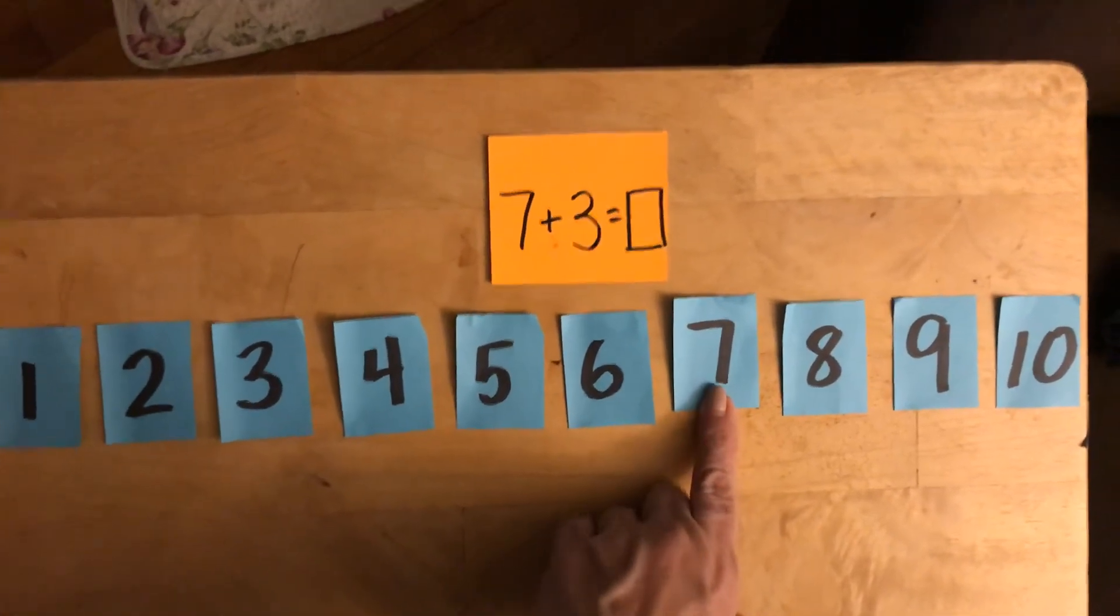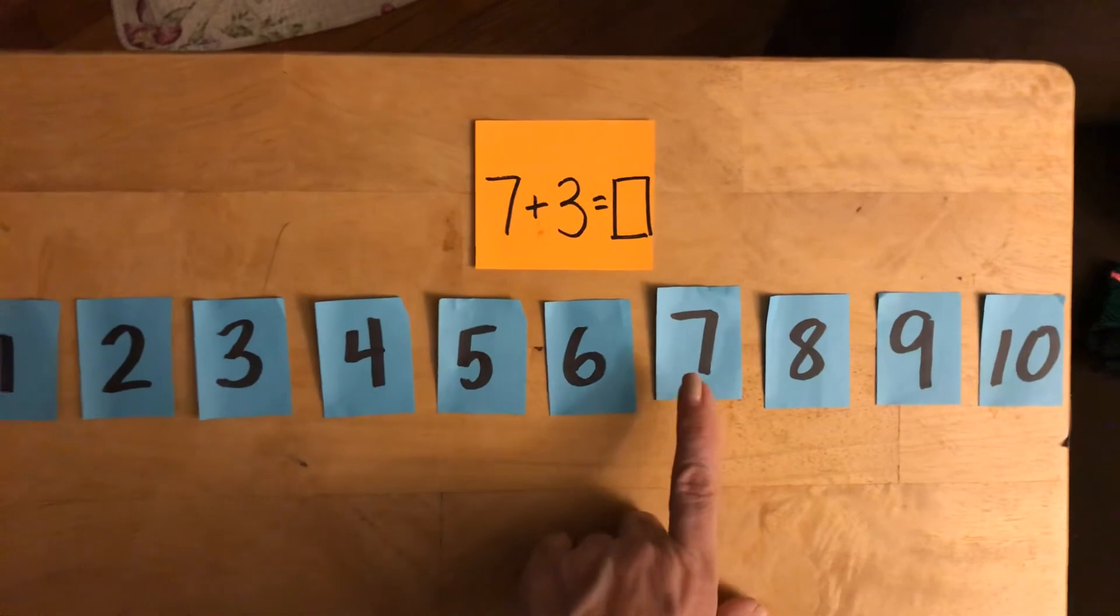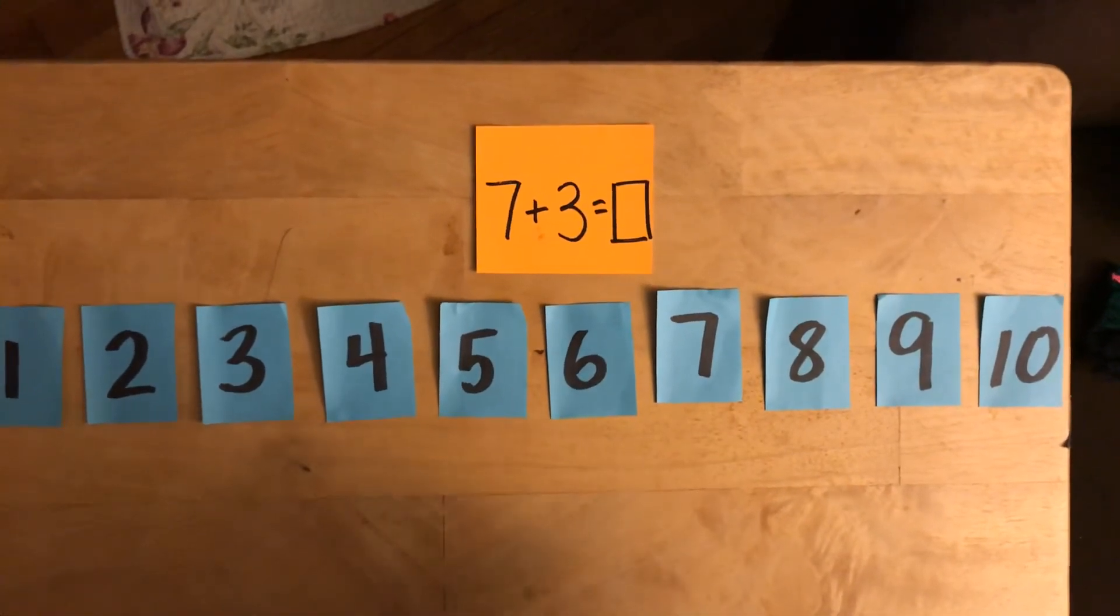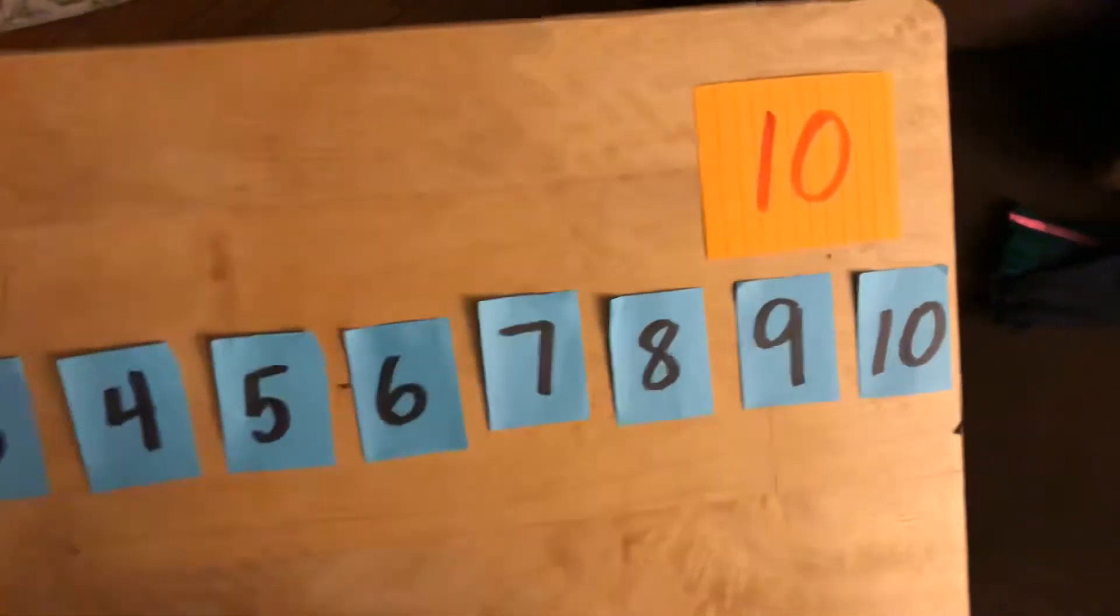Let's see. You should have went to the 7 and now add 3 more hops. And what number are you on? Ten.